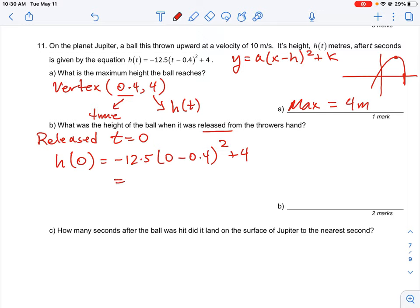That's just going to give you negative 0.4 squared plus 4. Put that into your calculator. Remember to square the term and then multiply by negative 12.5. You will find the answer here should be equal to roughly 2 meters. So that means the height of the ball when it's first released at time t=0, the height is equal to 2 meters.